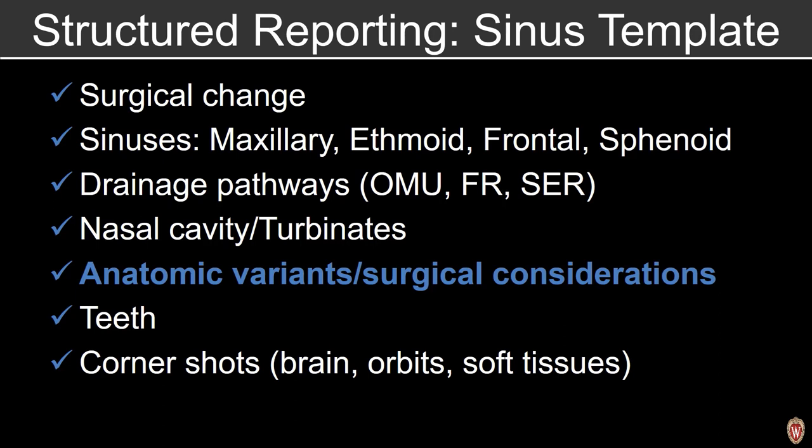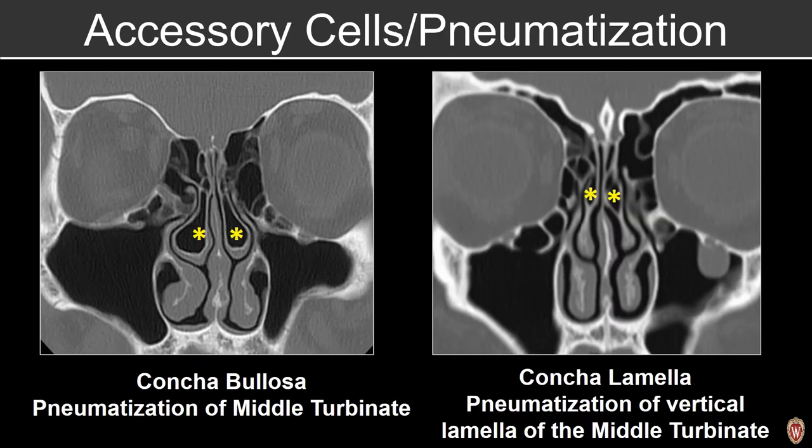Now let's take a look at some typical anatomic variants and surgical considerations. It's not uncommon to see pneumatization of a number of structures within the sinonasal cavity. It's important to comment on them, particularly in pre-surgical patients, and especially if those are causing anatomic compromise. In this patient with pneumatization of the middle turbinates, those are referred to as concha bullosa.